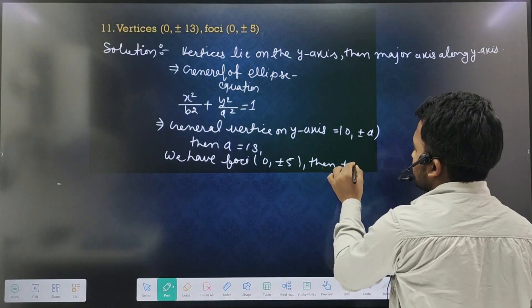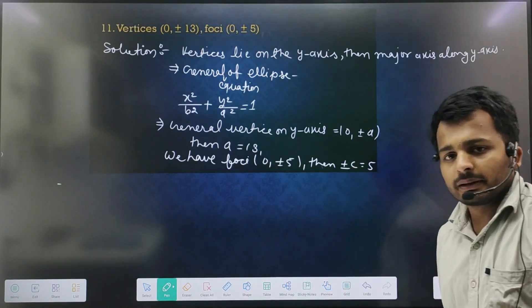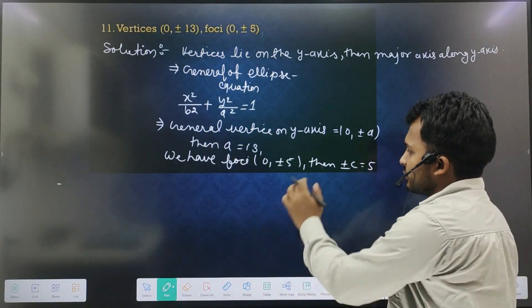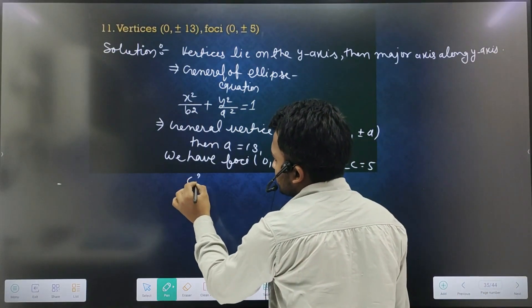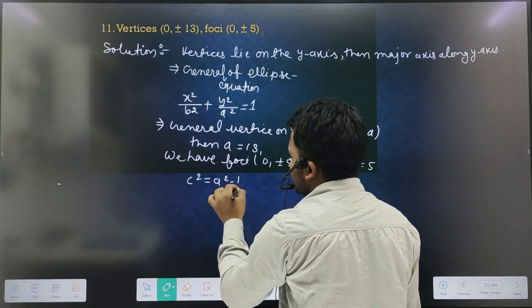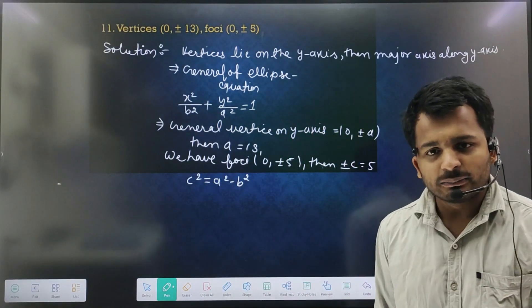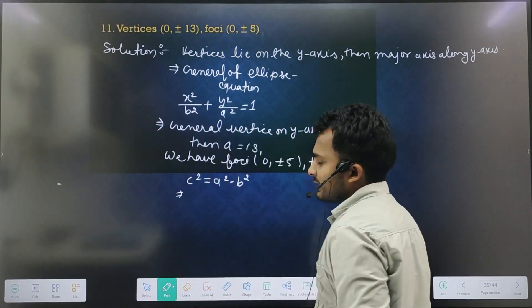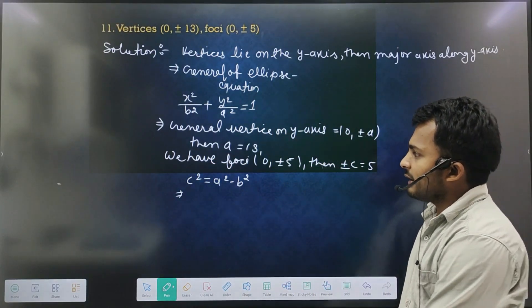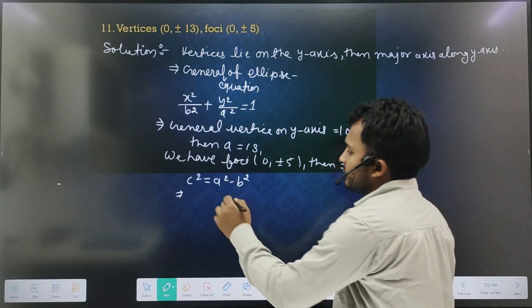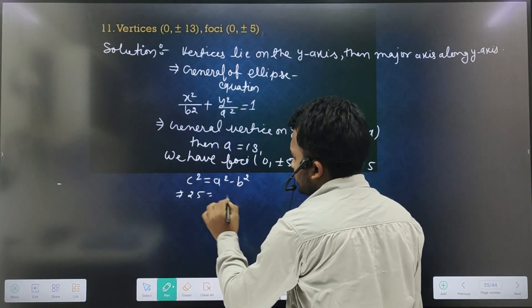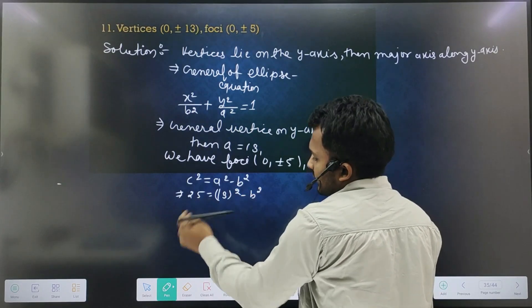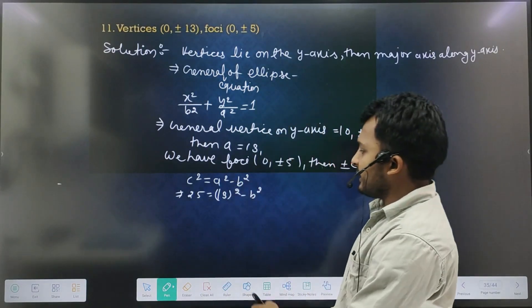Here we have c and a. c² = a² - b², so 25 equal to 169 minus b².